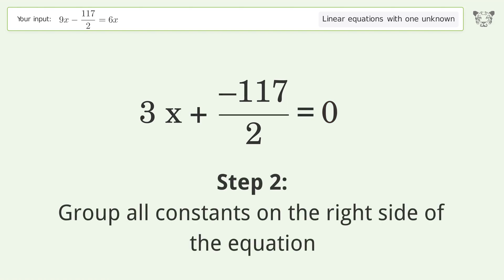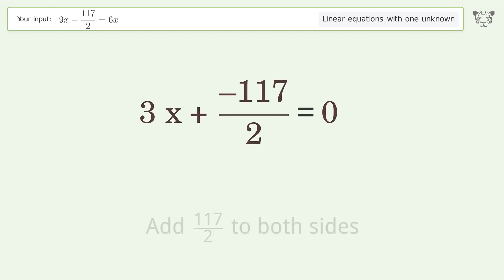Group all constants on the right side of the equation. Add 117 over 2 to both sides.